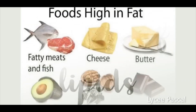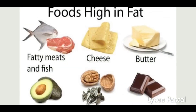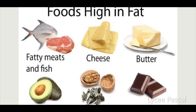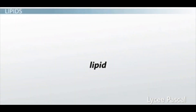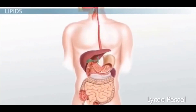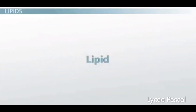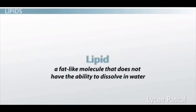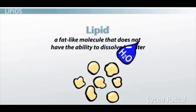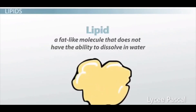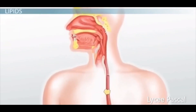In this lesson, we will learn about the digestion of lipids. Foods like cheese, butter, nuts, seeds, and chocolate contain fat. A lipid is defined as a fat-like molecule that does not have the ability to dissolve in water. That is why fats are difficult to digest — because fat doesn't like water, it tends to clump together and form large droplets as it moves through the digestive system.